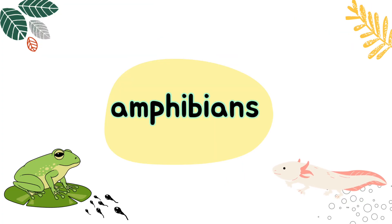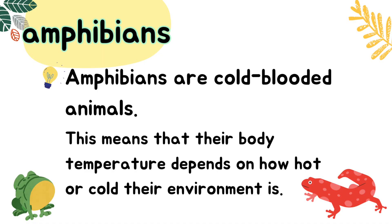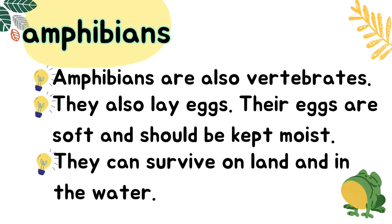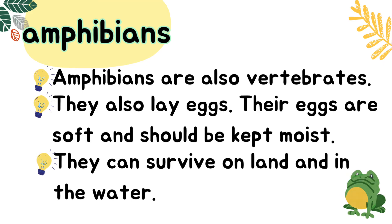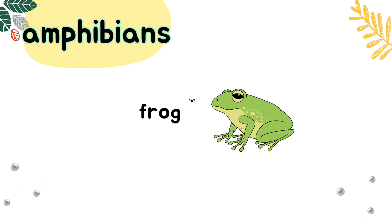Amphibians are cold-blooded animals. This means that their body temperature depends on how hot or cold their environment is. Amphibians are also vertebrates. They also lay eggs, and their eggs are soft and should be kept moist. They can survive on land and in the water.